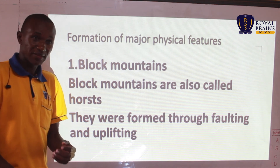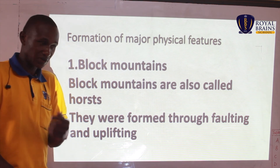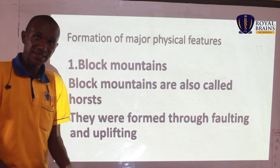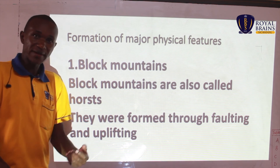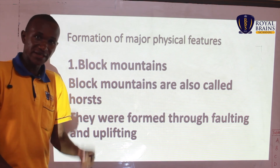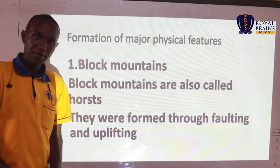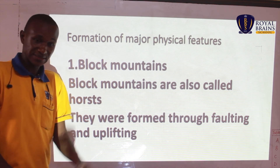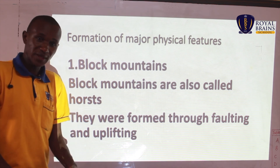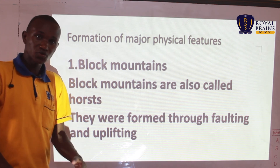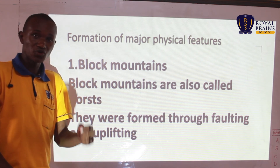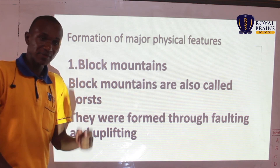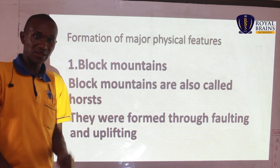Some of them were formed naturally. Examples of these physical features include mountains, hills, plateaus, and many others. But for today, we are not going to discuss all of them — we are just going to pick one. And to start with, we are going to start with mountains.